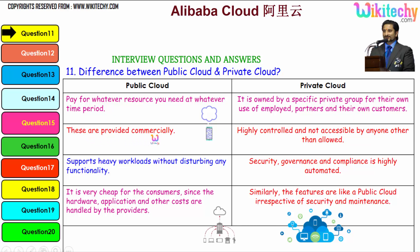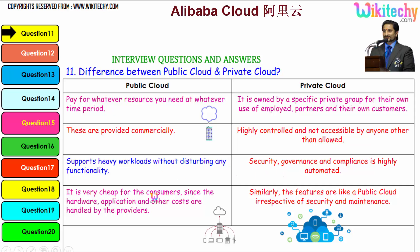Private cloud services are provided commercially. It is highly controlled and not accessible to anyone other than those allowed. It supports heavy workloads without disturbing any functionality. Security, governance, and compliance are highly automated. It is very cheap for consumers since the hardware, application, and other costs are handled by the providers. The features are like a public cloud irrespective of security and maintenance.